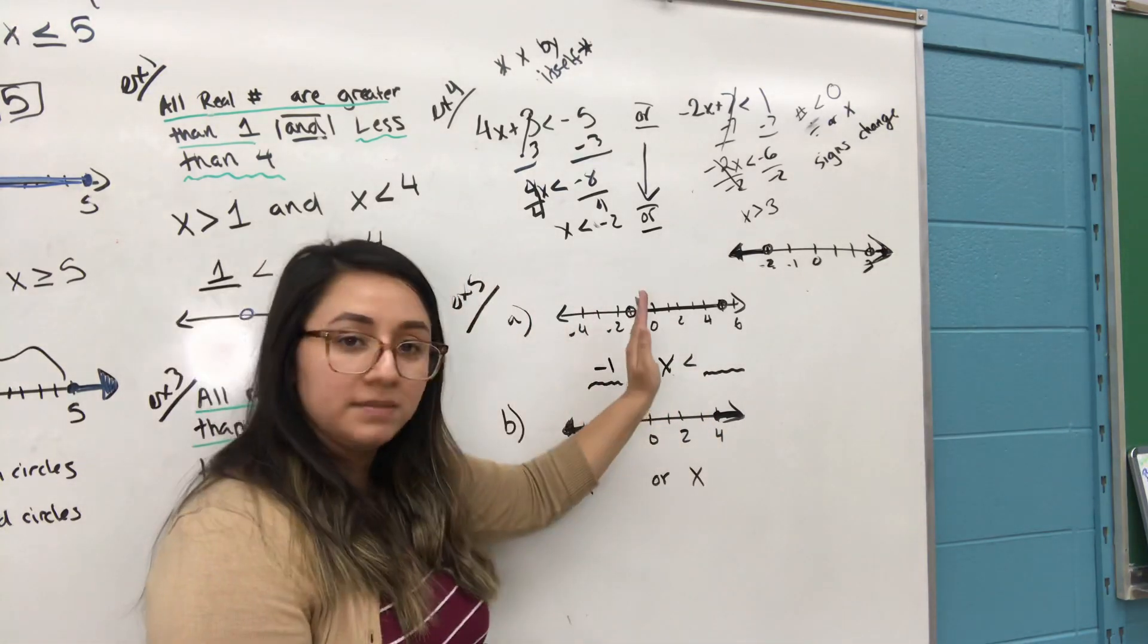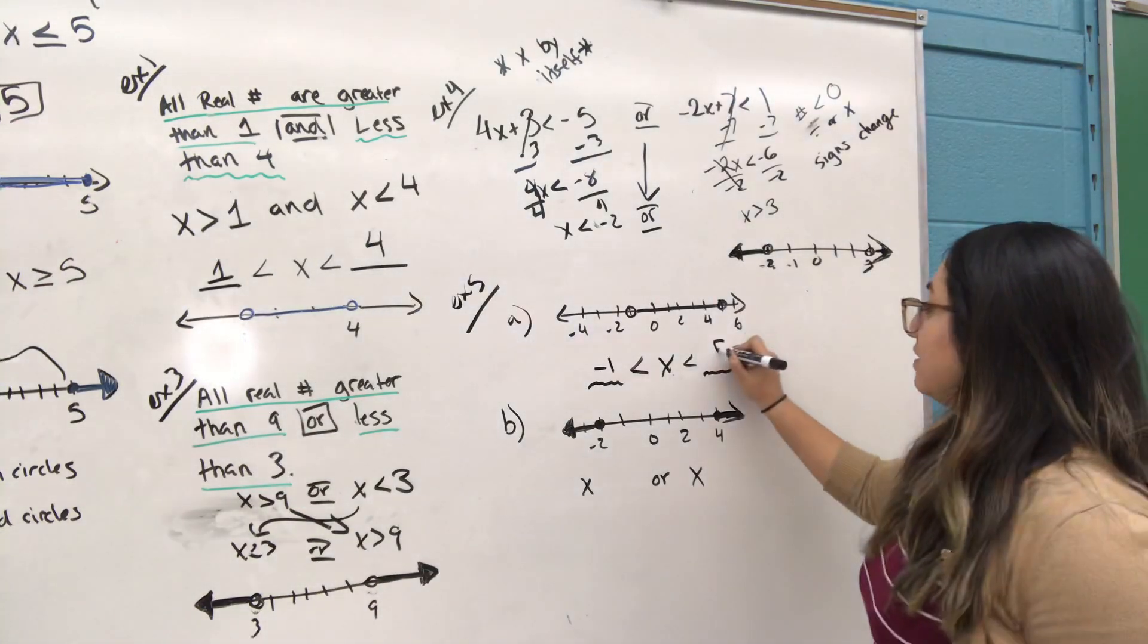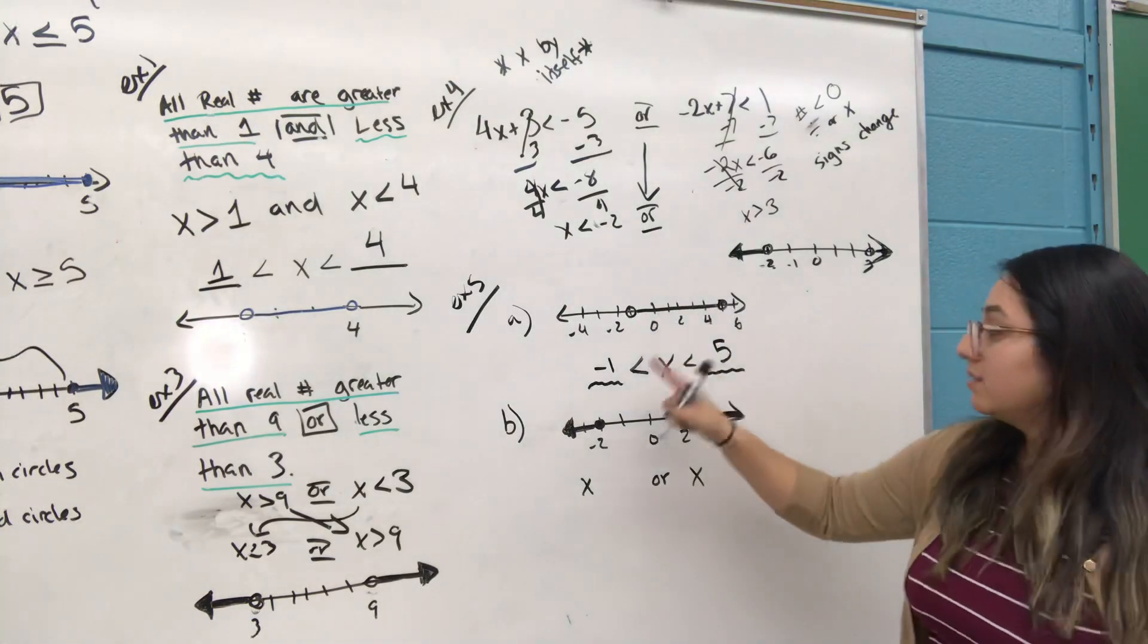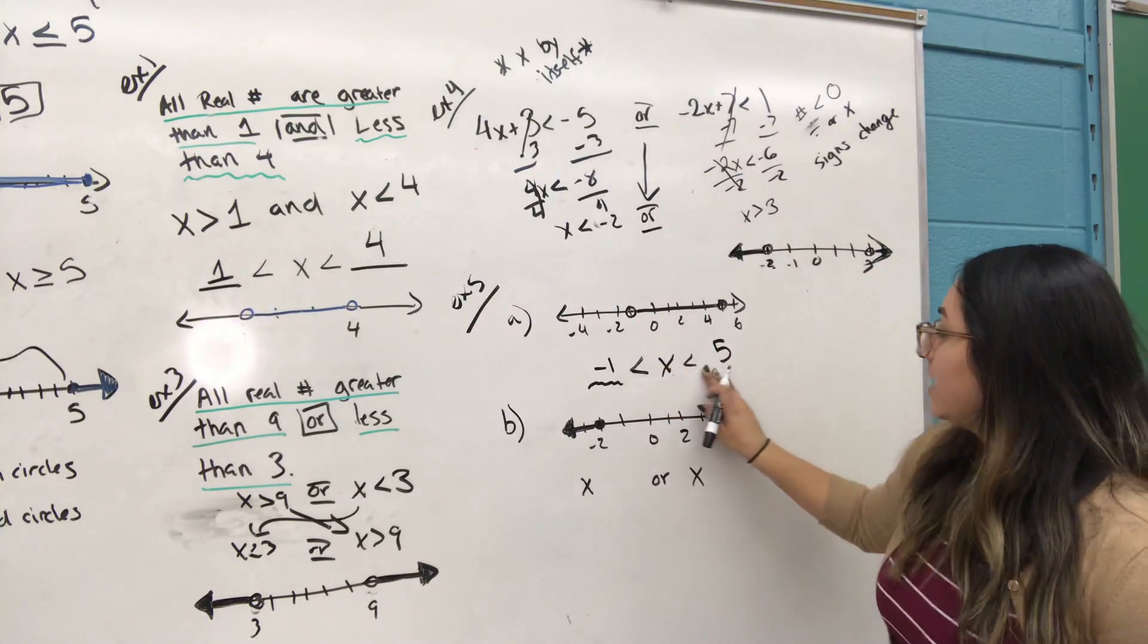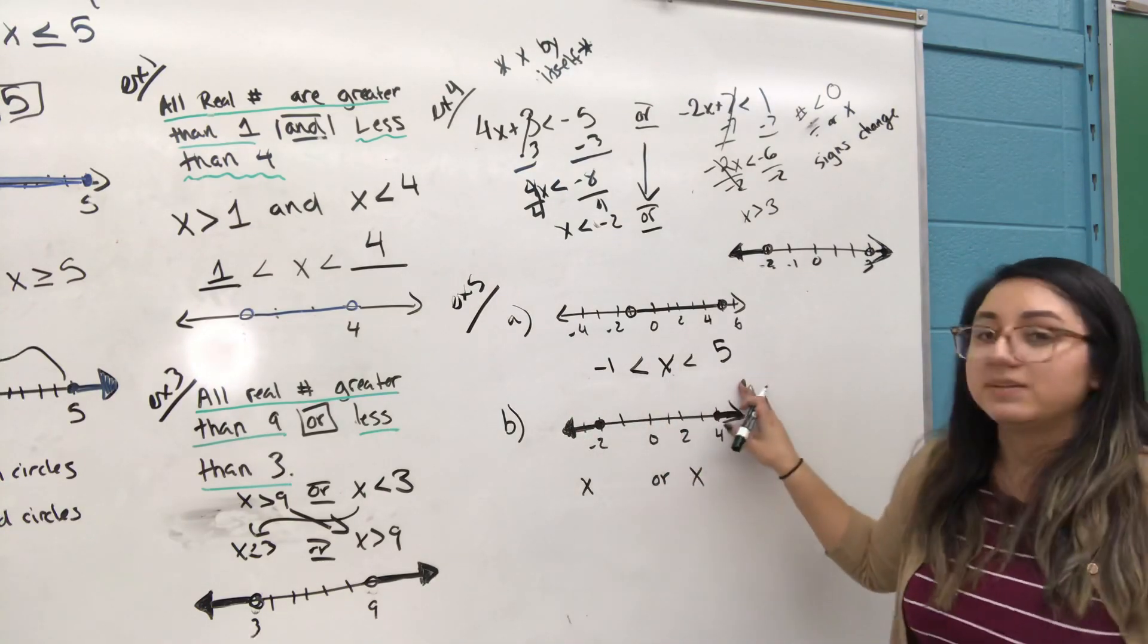So x is between negative one, and x is also between the number right here, it looks like it's five. So x is between the line that we filled in here, between negative one and five. And your answer is negative one is less than x, which is less than five.